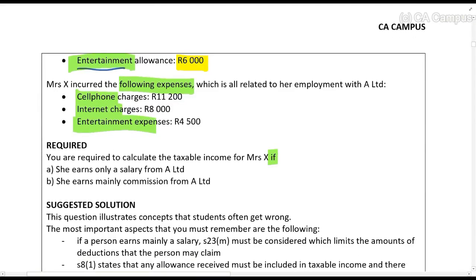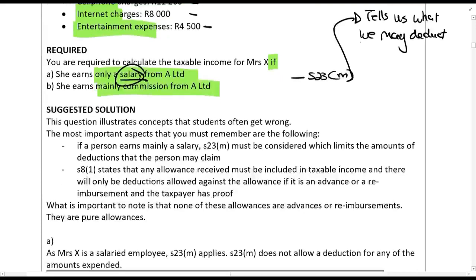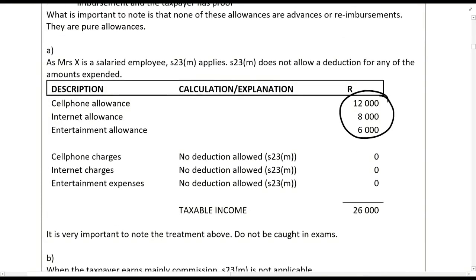Part A: what is the taxable income if she earns only a salary? Section 23m applies, and Section 23m tells us what we may deduct. It does not allow deductions for cell phone charges, internet charges, or entertainment expenses. So we are not allowed to deduct those even if incurred in the production of income. All allowances are included in full and no deduction is allowed because of Section 23m.